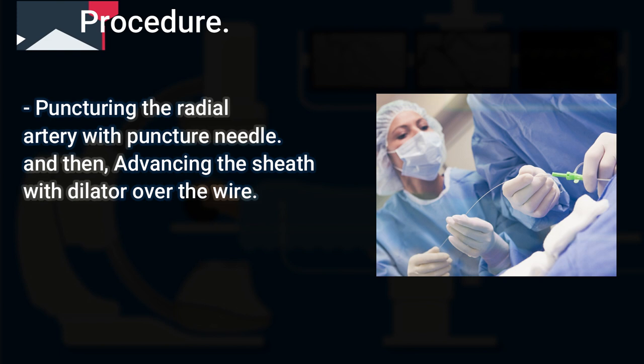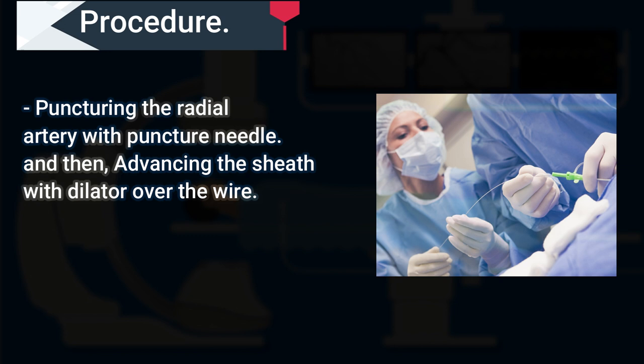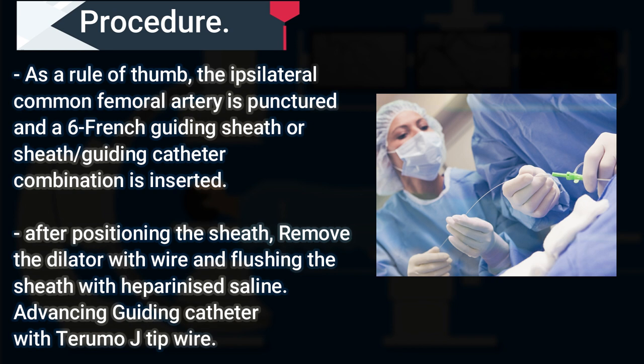The renal artery angioplasty procedure begins with puncturing the radial artery with a puncture needle, and then advancing the sheath with dilator over the wire. After positioning the sheath, removing the dilator with wire and flushing the sheath with heparinized saline.